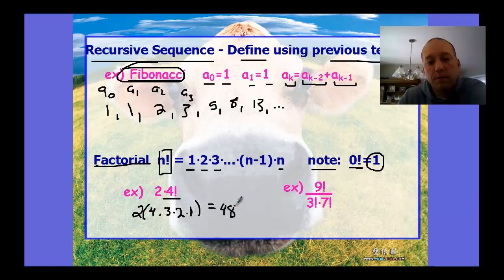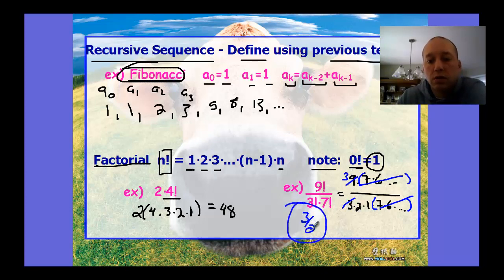9 factorial over 3 factorial times 7 factorial. This has some reducing because 9 factorial is 9 times 8 times 7 times 6 times dot, dot, dot. In the denominator, we have 3 times 2 times 1 times 7 times 6 times dot, dot, dot. So the 7, 6 multiplied all the way to 1 is the same on top and bottom, so those reduce out. All we have left is 9 over 3 times 2. The 3 reduces with the 9, so we have three halves as the result. We can do some reducing so we don't have to do all the multiplication.